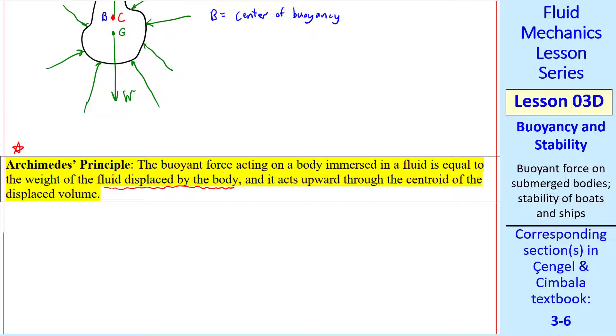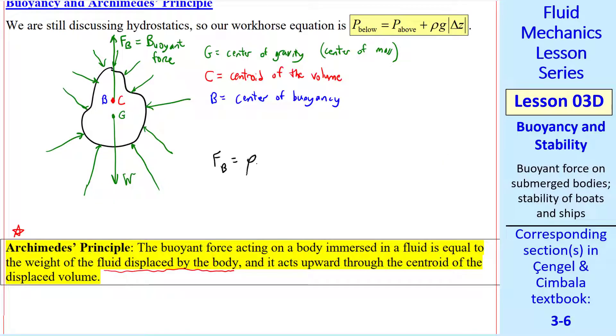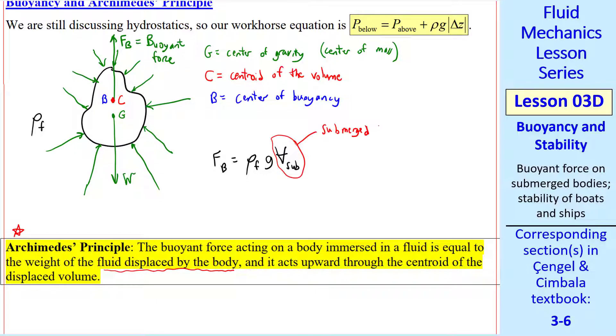This is the key part. For our case, the buoyant force is the density of the fluid, the density out here, times g, times V_sub, which we define as the submerged portion of the volume. In our case, the body is fully submerged, so V_sub is the same as the total volume.